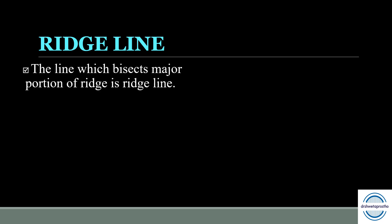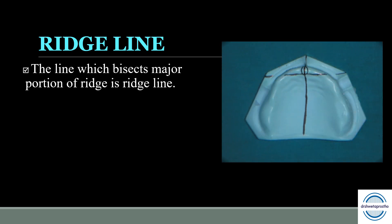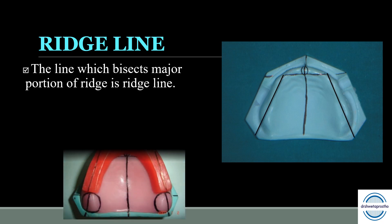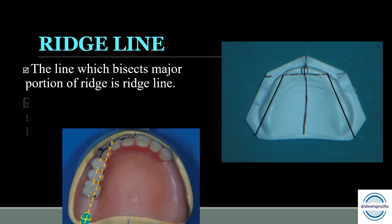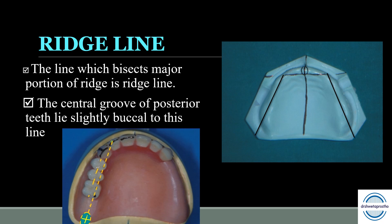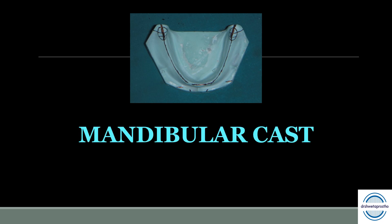Ridge line: the line which bisects the major portion of the ridge is called the ridge line. It extends from the canine line posteriorly to the land area, bisecting the ridge. The occlusal rims should follow this line. During teeth arrangement, the central groove of the posterior teeth should lie slightly buccal to this line. Now let us discuss some important guidelines in relation to the mandibular cast.